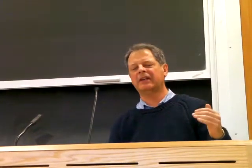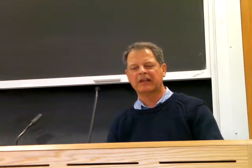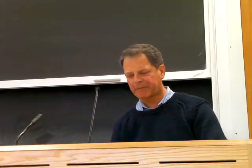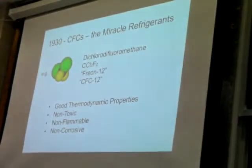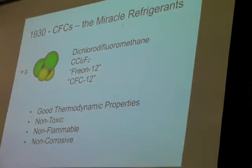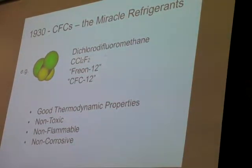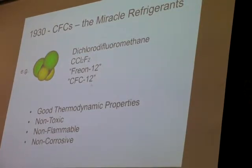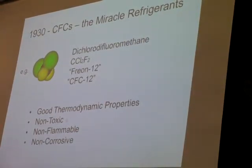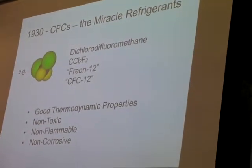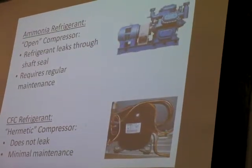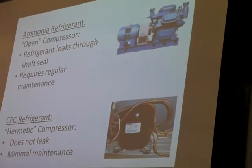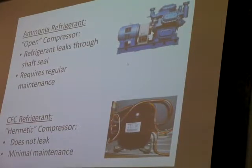Refrigeration was rather limited until the invention of better refrigerants — it was basically an industrial process that required constant supervision. The big breakthrough was CFCs, invented at the end of the 1920s and starting to be used in the 1930s. These were a miracle. Here's one of them: dichlorodifluoromethane, or CCl2F2, with the industrial name Freon 12 or CFC-12. It was the first CFC refrigerant invented and it was ideal: good thermodynamic properties, non-toxic, non-flammable, non-corrosive — an excellent refrigerant.